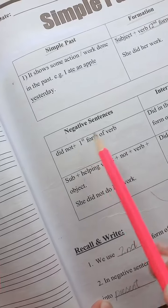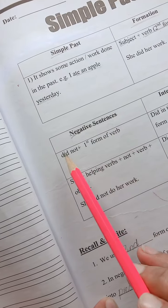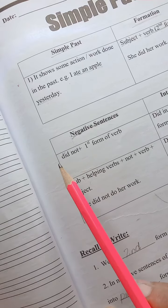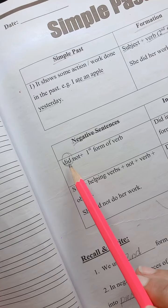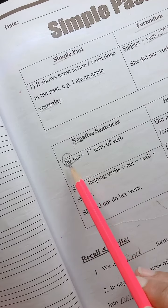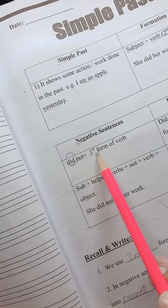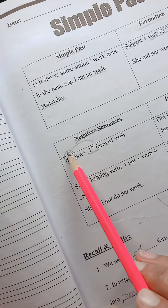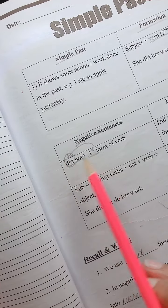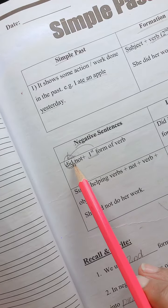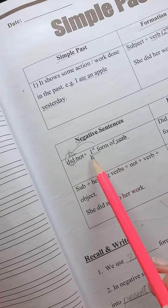When you have to create negative sentences, the structure changes. How does it change? We use this helping verb, did. When we use did, we always use a first form with did. Because did itself is a second form, we cannot add double second form. So did will change the form of verb in the first form.